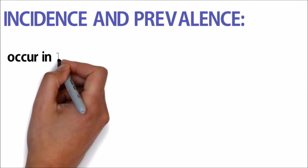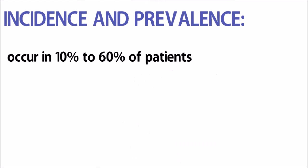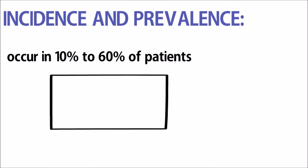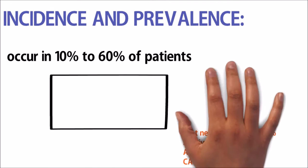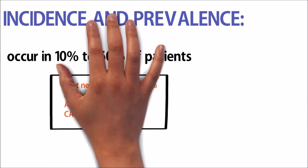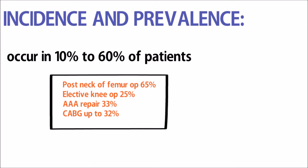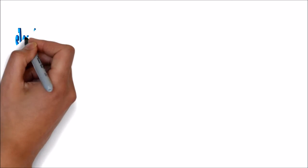The incidence and prevalence varies according to different surgeries. It occurs in up to 10 to 60 percent of patients, and varies between post-hip fracture surgery, which is 65 percent, and aortic aneurysm repair, which is 33 percent.